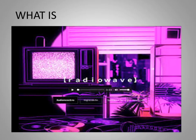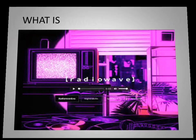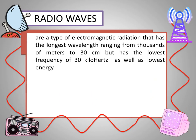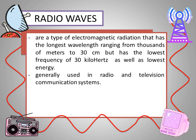What is a radio wave? Radio waves are a type of electromagnetic radiation that has the longest wavelength ranging from thousands of meters to 30 cm, but has the lowest frequency of 30 kHz as well as lowest energy. It is also generally used in radio and television communication systems.